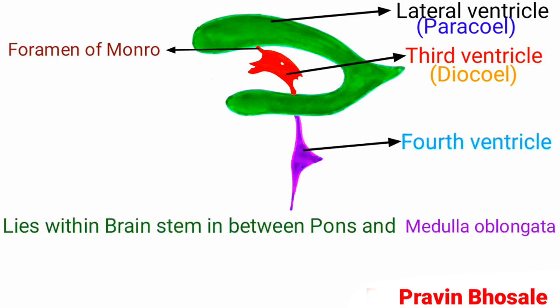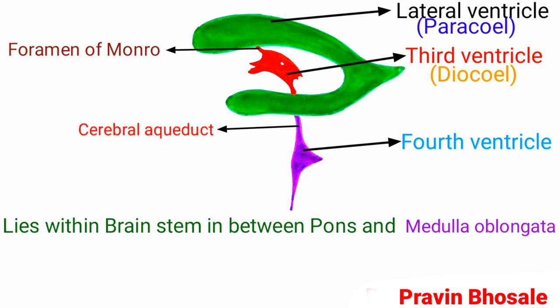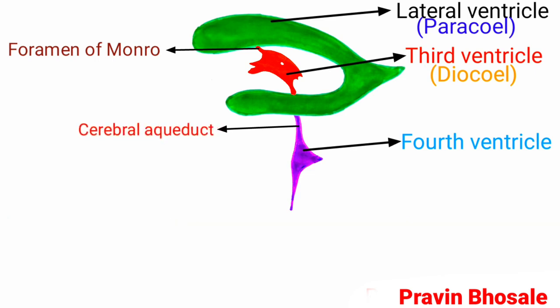The fourth ventricle lies within the brain stem, between the pons and medulla oblongata. It is attached to the third ventricle by the cerebral aqueduct, and it continues as the central canal.